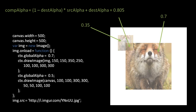Note a few interesting things about this formula. If the destination alpha is 0, the resulting composite alpha equals the source alpha — intuitively, drawing on a fully transparent surface gives you whatever the source's transparency is. Also, if either the destination alpha or the source alpha is 1 (fully opaque), then the composite alpha is 1 as well — drawing anything on top of or under something fully opaque doesn't change full opaqueness. Additionally, the composite alpha formula is commutative: it doesn't matter which we treat as source and which as destination.